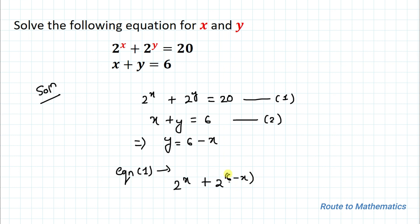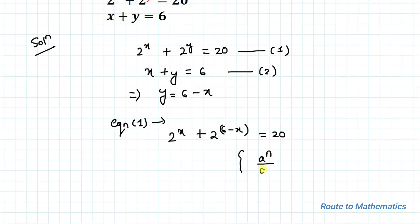Equation 1 becomes: 2 to the power x plus 2 to the power (6 minus x) equals 20. Now we'll apply an exponential rule: a to the power n divided by a to the power m equals a to the power (n minus m). Using this rule, we can write 2 to the power (6 minus x) as 2 to the power 6 divided by 2 to the power x.